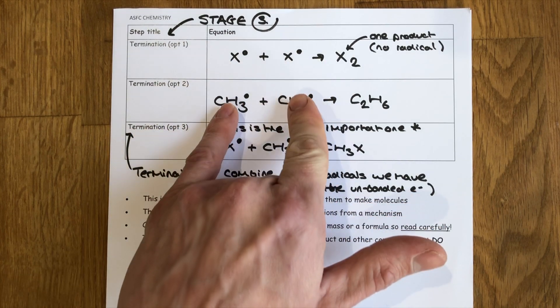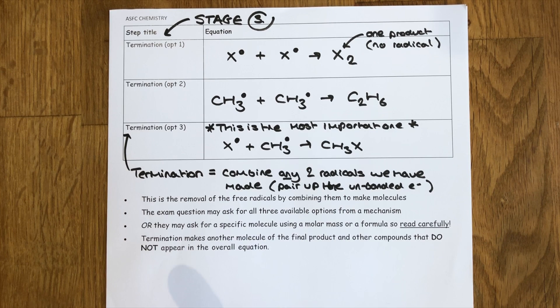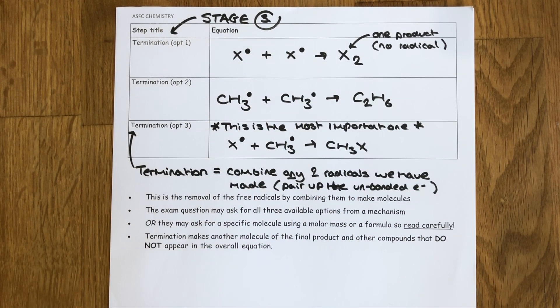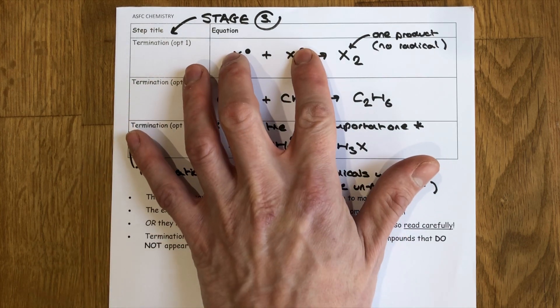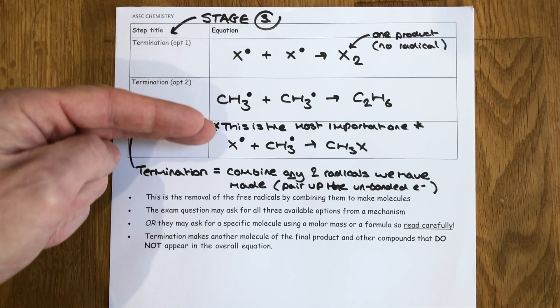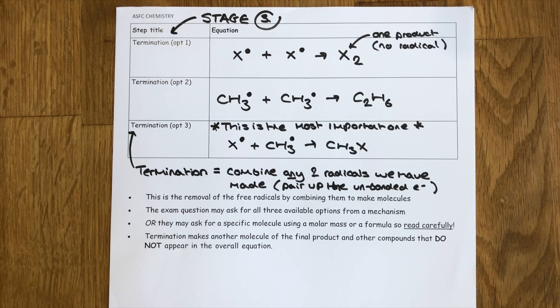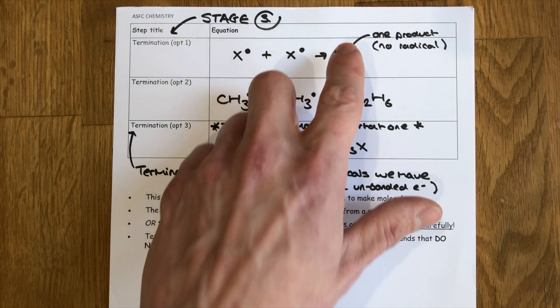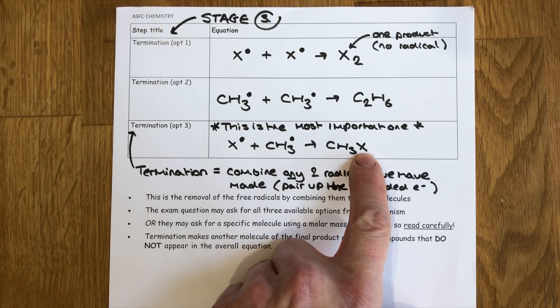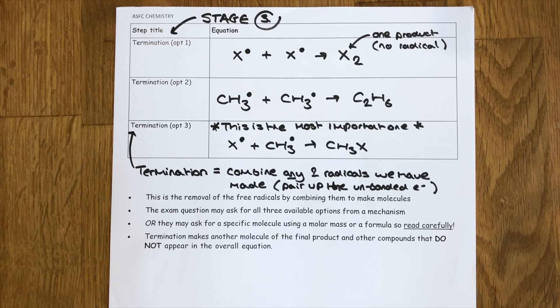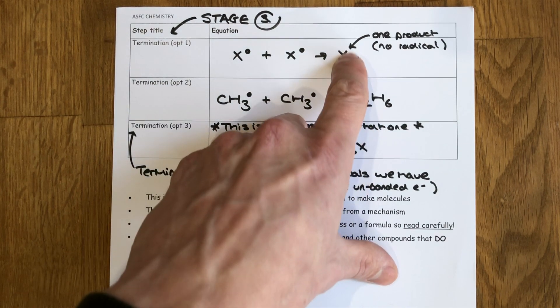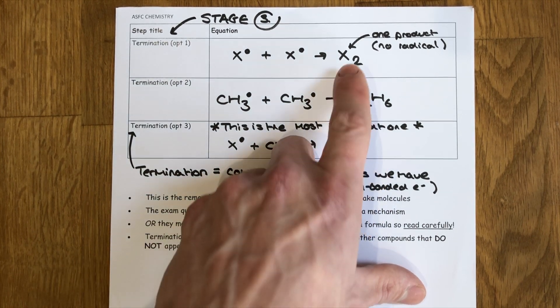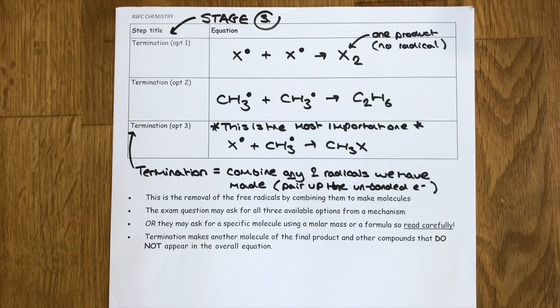What happens is we take any two radicals that have been used so far, we can mix and match or take two of the same radical, and we effectively pair up the unpaired electrons. These two radicals will combine together to make a molecule. This is called termination and option three here is the one that's most demanded by the exam questions because unlike the other two, it shows the formation of the target organic molecule that was represented by the overall equation. These two weren't shown as products at all. These are alternative products that could be made in termination and they're actually one of the criticisms of how we can end up with a mixture of organic products.